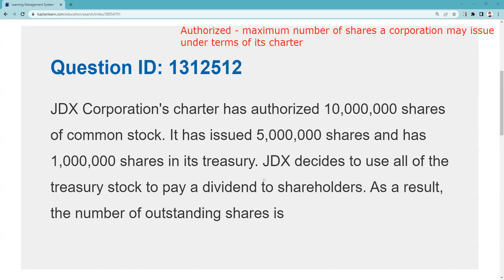This could be a definitional question. For example, if I ask you on the exam 'the maximum number of shares a corporation can issue under its terms of charter,' that's authorized shares. Here that number is 10 million. If we go past that, we need shareholder approval — shares vote, not people. It issued 5 million shares. Issued shares are shares that have been placed with investors. It also has 1 million shares in treasury. Treasury stock is a way the corporation returns capital to shareholders, similar to dividends — the board may buy back stock if they think it's undervalued.